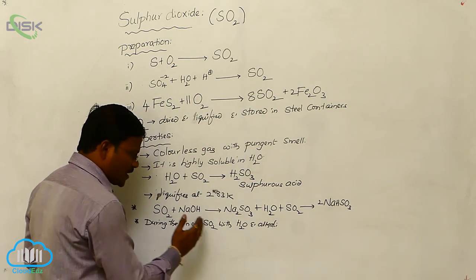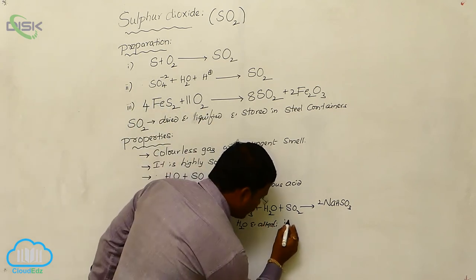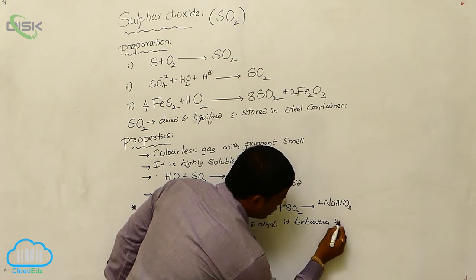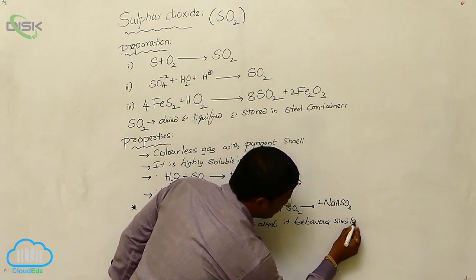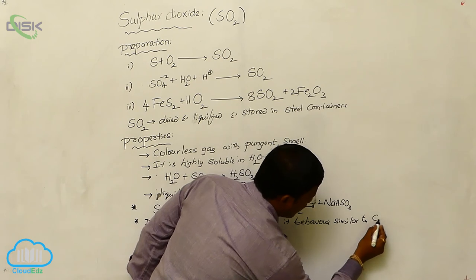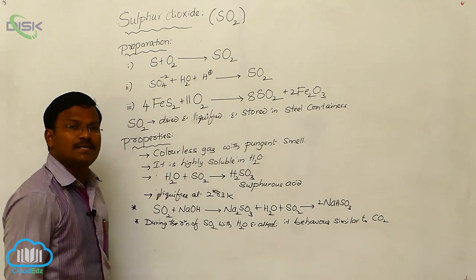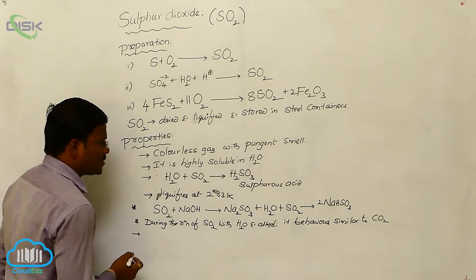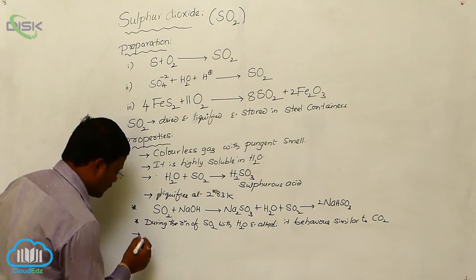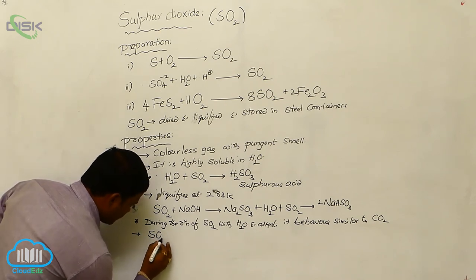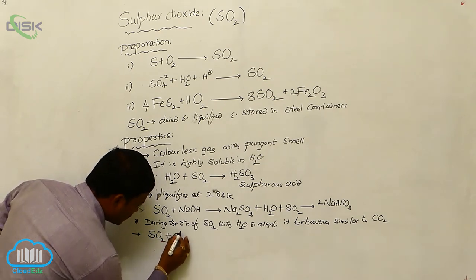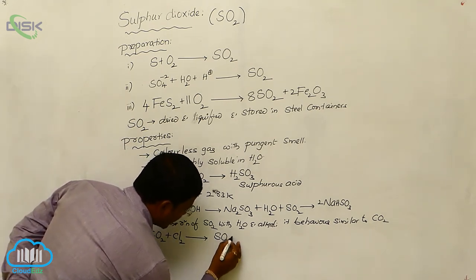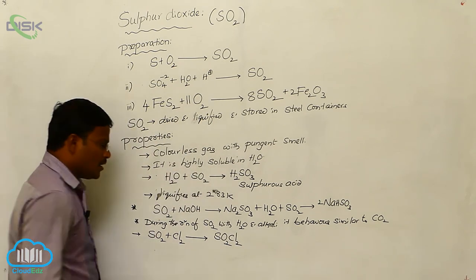During the reaction of sulfur dioxide with water and alkali, it behaves similar to carbon dioxide. Note: all bases are not called alkalis — only those bases which are soluble in water are called alkalis. Sulfur dioxide reacts with water to produce sulfurous acid, and with alkali (sodium hydroxide) to produce sodium bisulfite. Sulfur dioxide also reacts with chlorine gas to produce sulfuryl chloride, SO₂Cl₂.